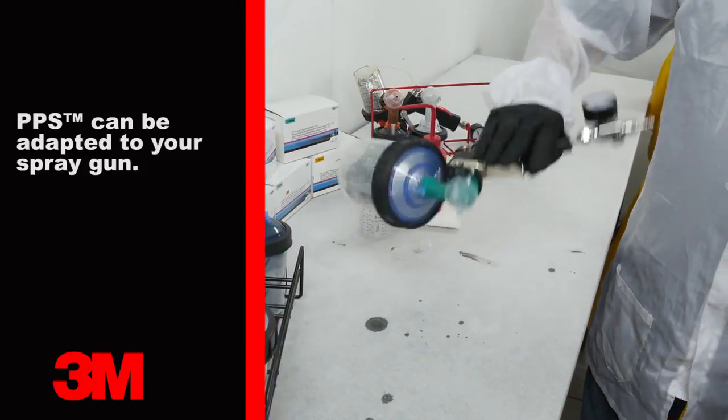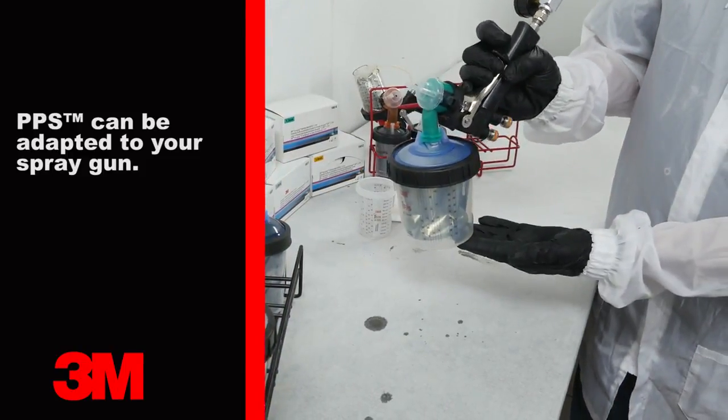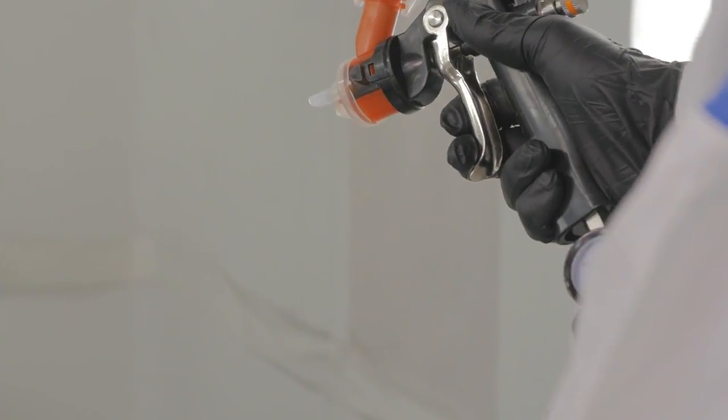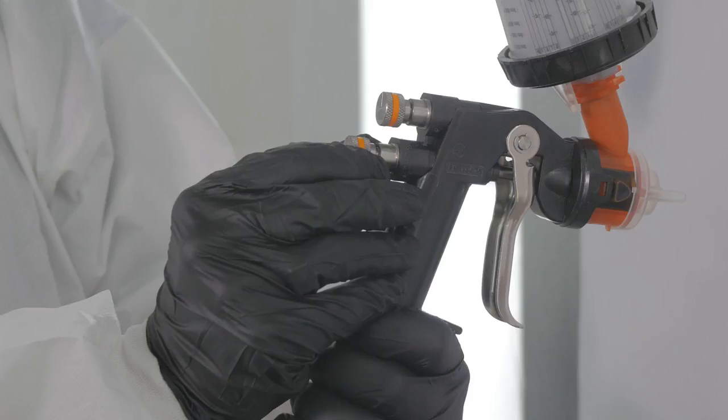It is important to attach the lid and cup such that the latches on the lid are parallel with the atomizing head. You are now ready to set up the spray gun for best results.